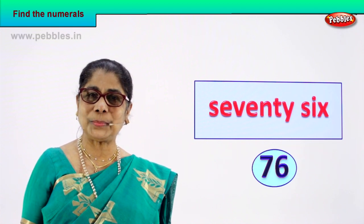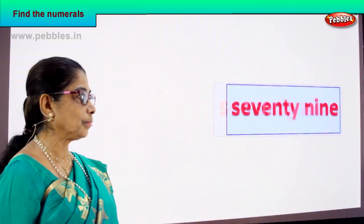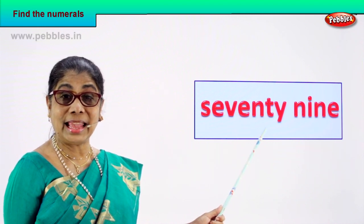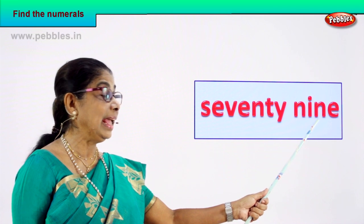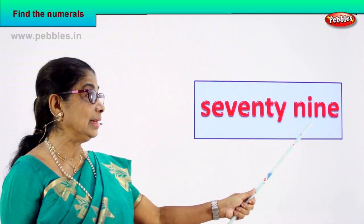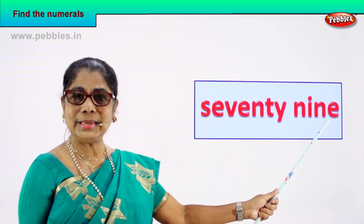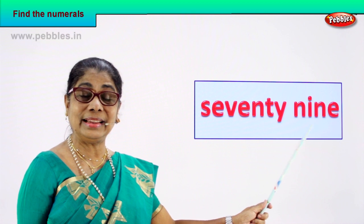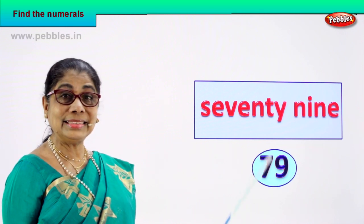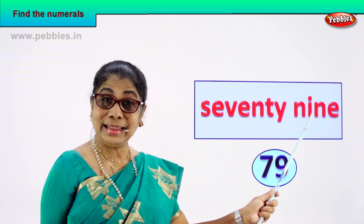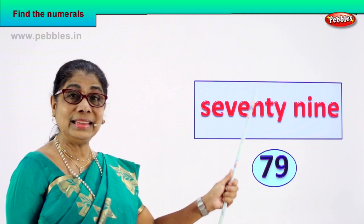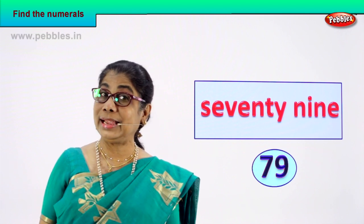Shall we take the next number name? S-E-V-E-N-T-Y, 70. N-I-N-E, 9. Seventy-nine, 79. For this number name, how do we find the numeral? Seven and nine — 79. You learn to read the number name and write down the numeral.